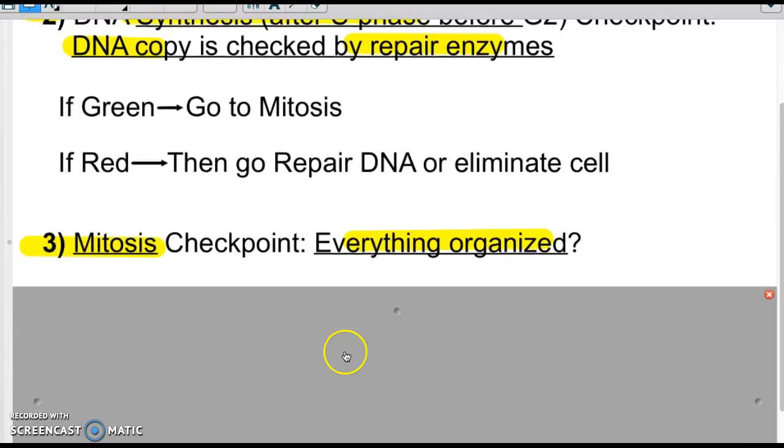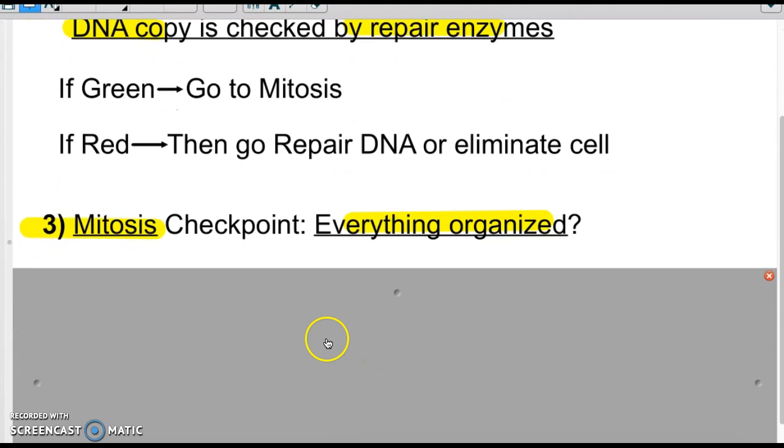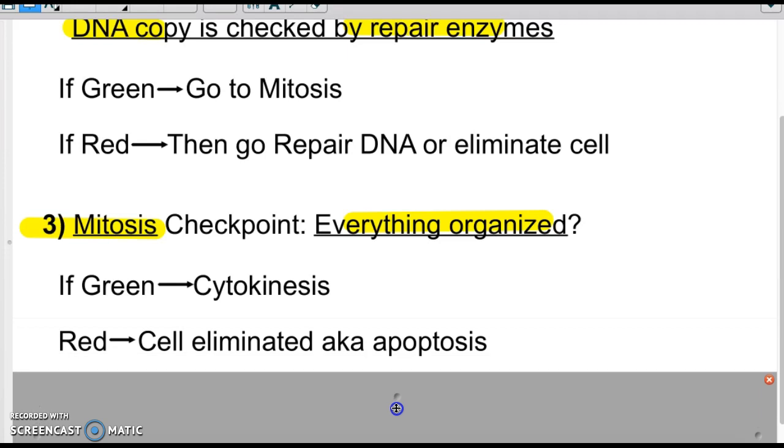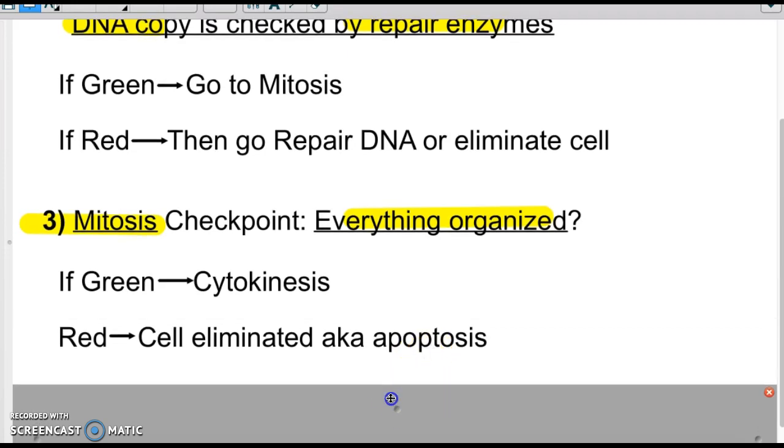The third checkpoint is mitosis. Mitosis is making sure everything is organized. The spindle fibers are created. The centrioles are functioning correctly. And they're all making sure that mitosis is working. If the green light is good to go, it's going to move on to cytokinesis. If there is a red light, there is no fixing at this point. The cell will be eliminated. If there are things that went wrong in mitosis, there's no going back from that. Usually the cell is eliminated at that point.